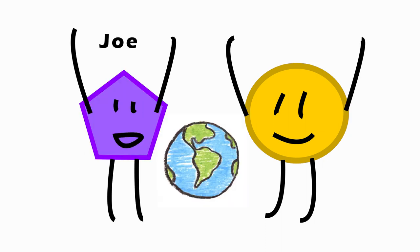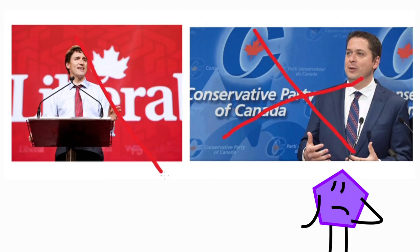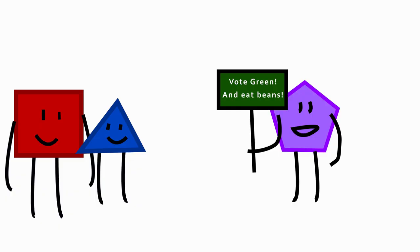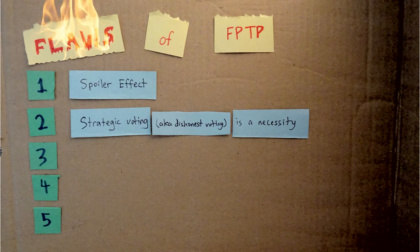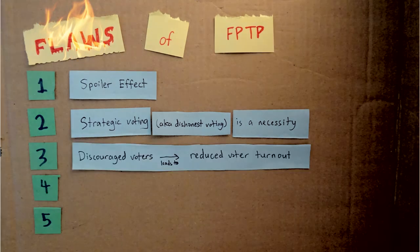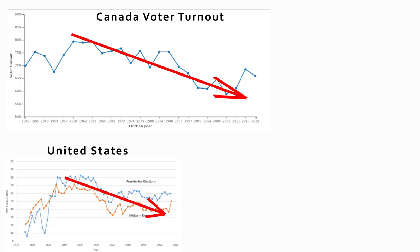Let's look at another voter — Bob's friend Joe, also a supporter of the Green Party. Joe doesn't really like either of the big candidates, and he knows that supporting the party he likes will not change anything. When you're in Joe's position, it's easy to feel like you cannot meaningfully contribute by voting, and many people in this position end up deciding not to vote at all. Voter turnouts everywhere have been going down.